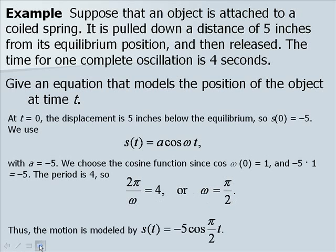Thus, the motion is modeled by S of t equals negative 5 cosine of pi over 2 t.